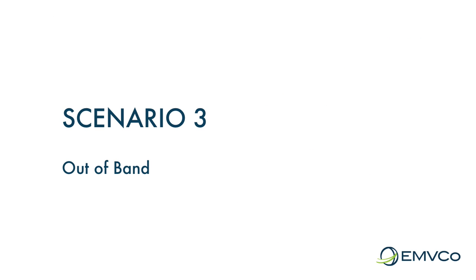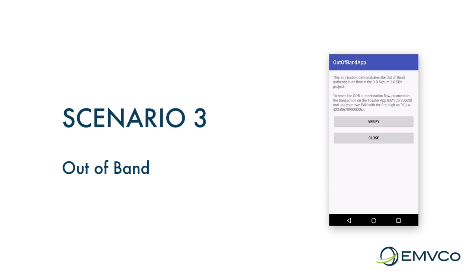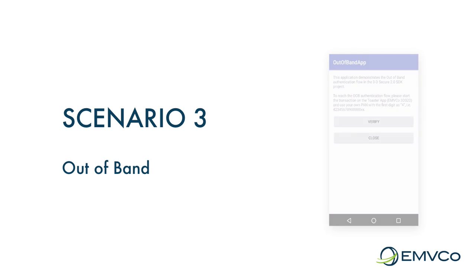The 3D Secure 2.0 specification makes it possible for issuers to use out-of-band authentication methods. For example, an issuer's own authentication application could be utilized. In this particular example, we have a simple secondary application that is used for authentication. In production usage, this would be replaced by an issuer's authentication app.